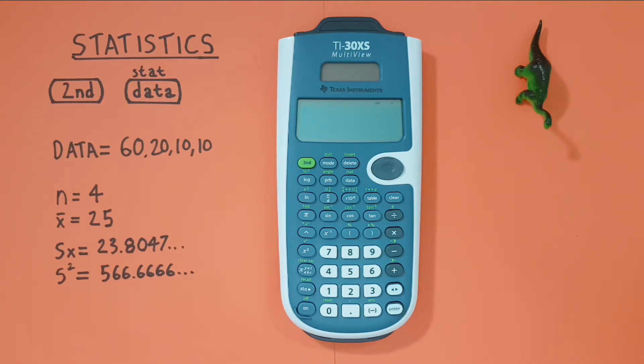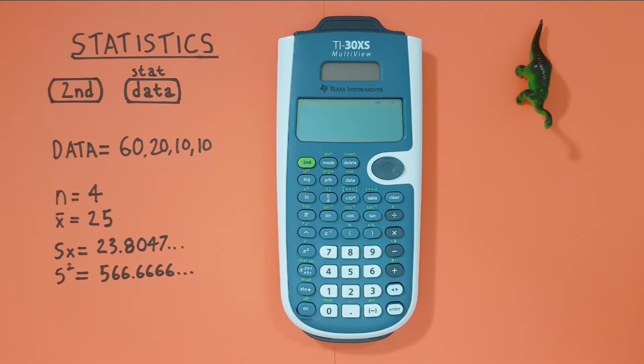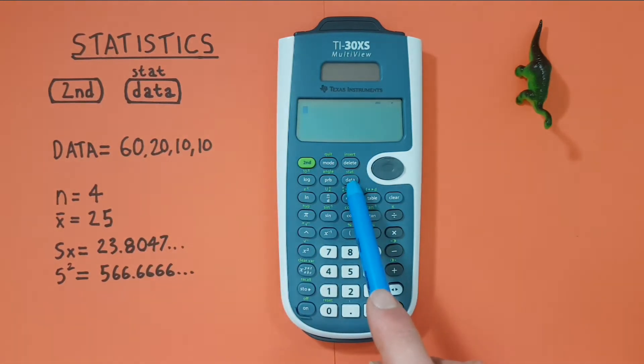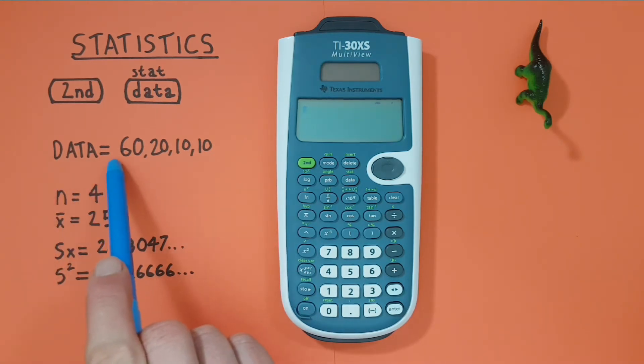To do this we'll be using the second function key that looks like this located here as well as the data key with the second function of stat that looks like this located here. For this example we'll be using this data set here 60, 20, 10, 10.